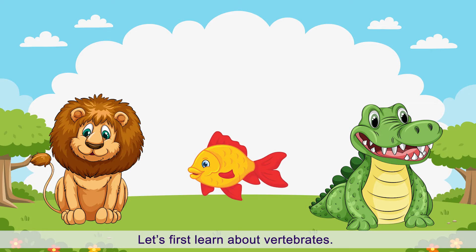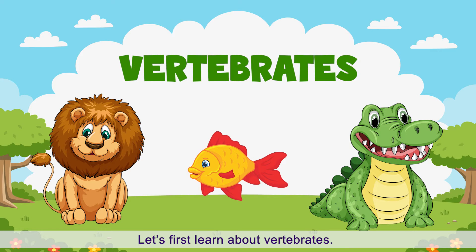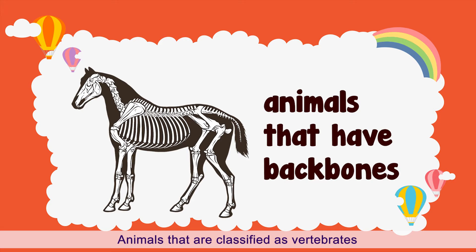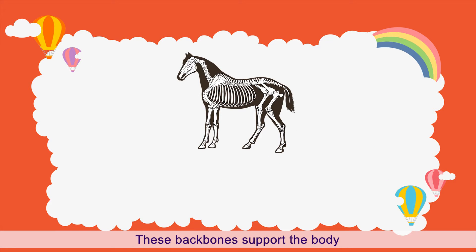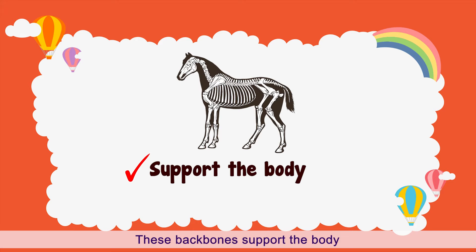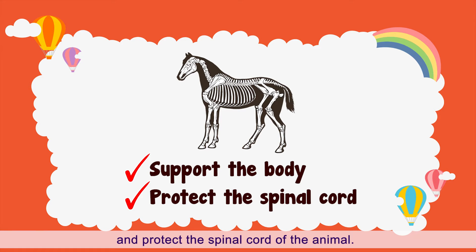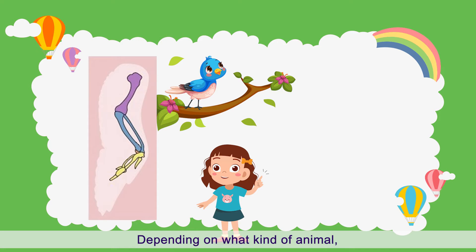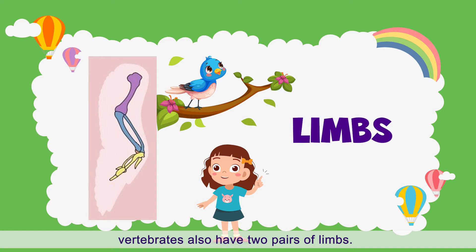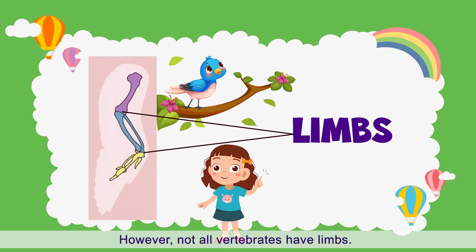Let's first learn about vertebrates. Animals that are classified as vertebrates are simply animals that have backbones. These backbones support the body and protect the spinal cord of the animal. Depending on what kind of animal, vertebrates also have two pairs of limbs. However, not all vertebrates have limbs.